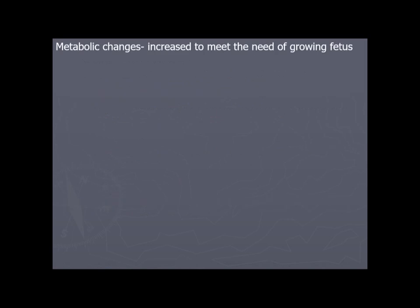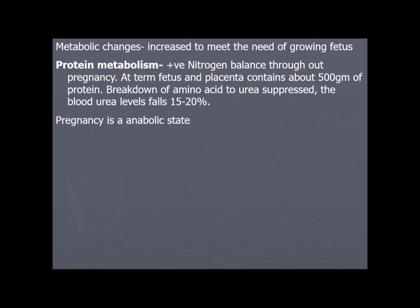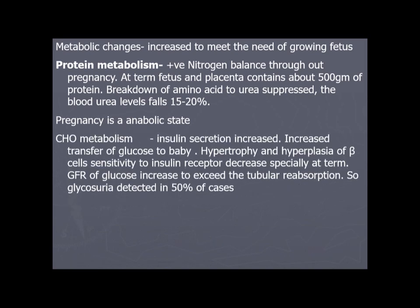Metabolic changes meet the needs of the growing fetus. Protein metabolism: a positive nitrogen balance is maintained throughout pregnancy; at term, the fetus and placenta contain approximately 500 grams of protein. Breakdown of amino acids to urea is suppressed, and blood urea levels fall 15–20%. Pregnancy is an anabolic state.